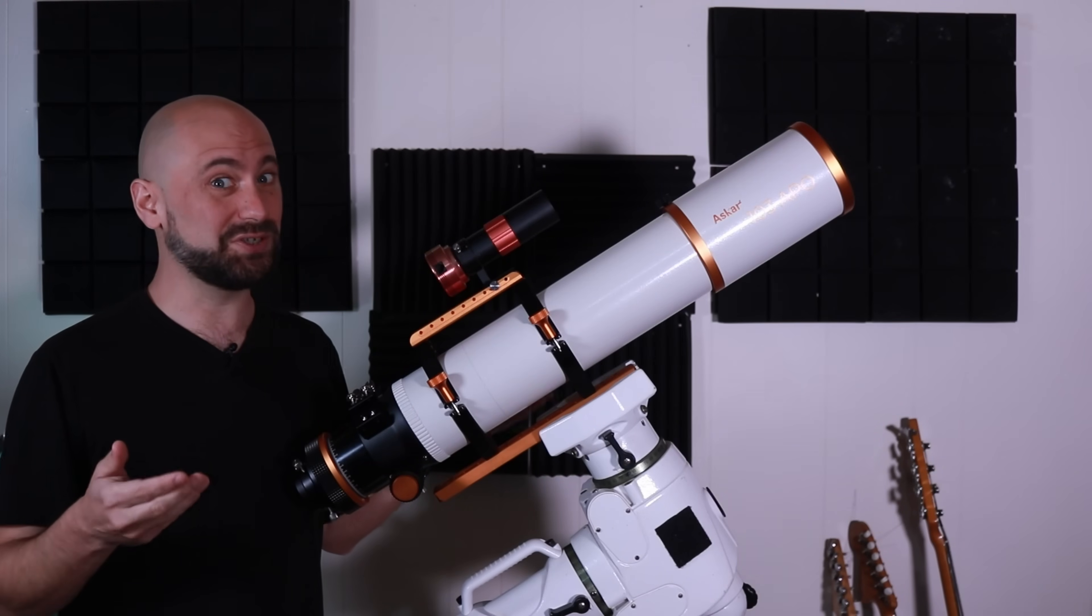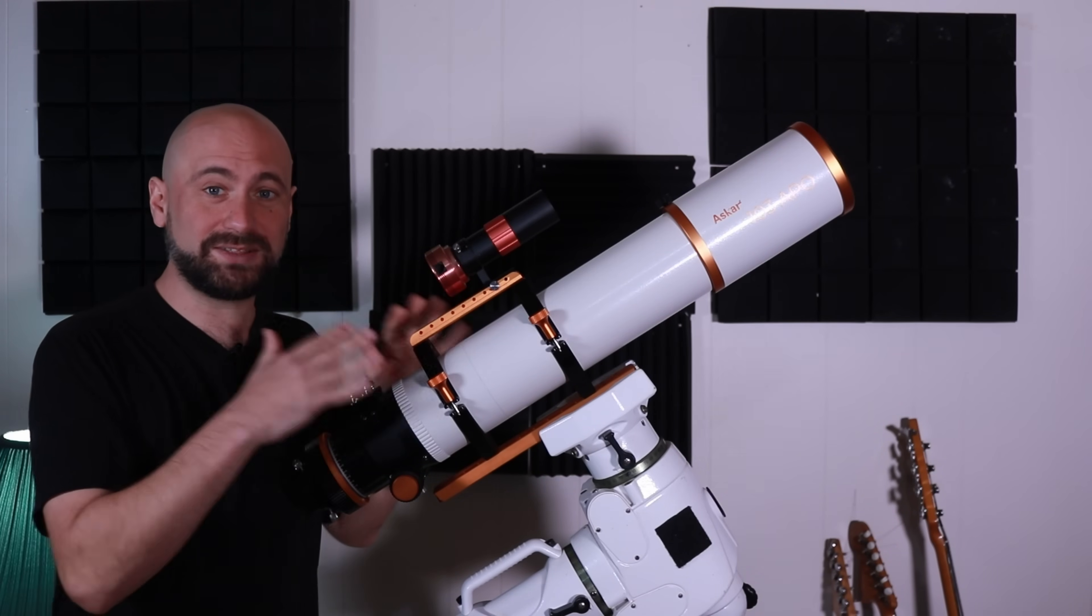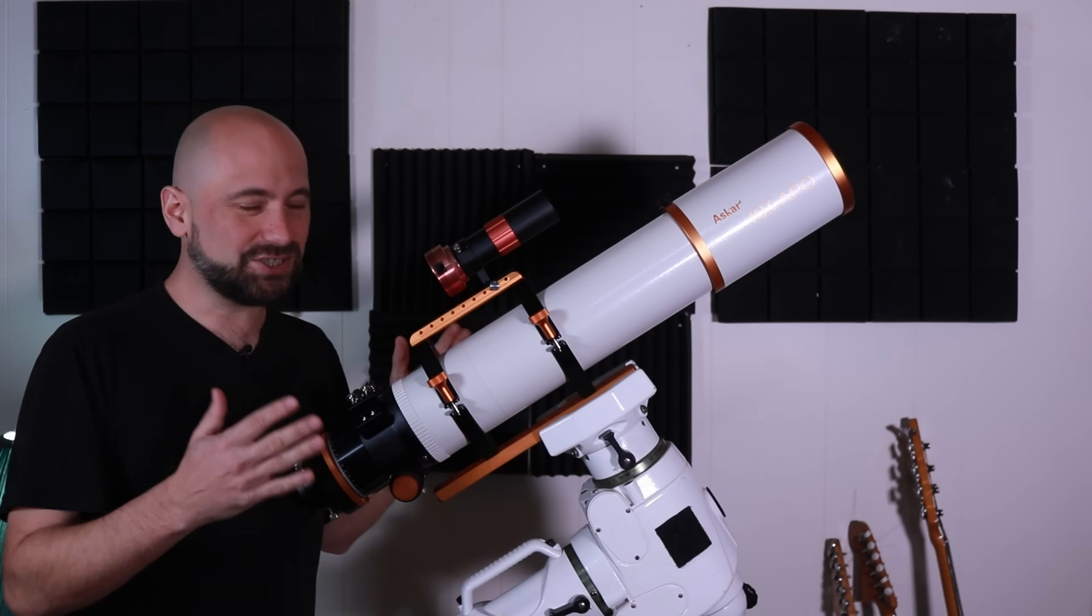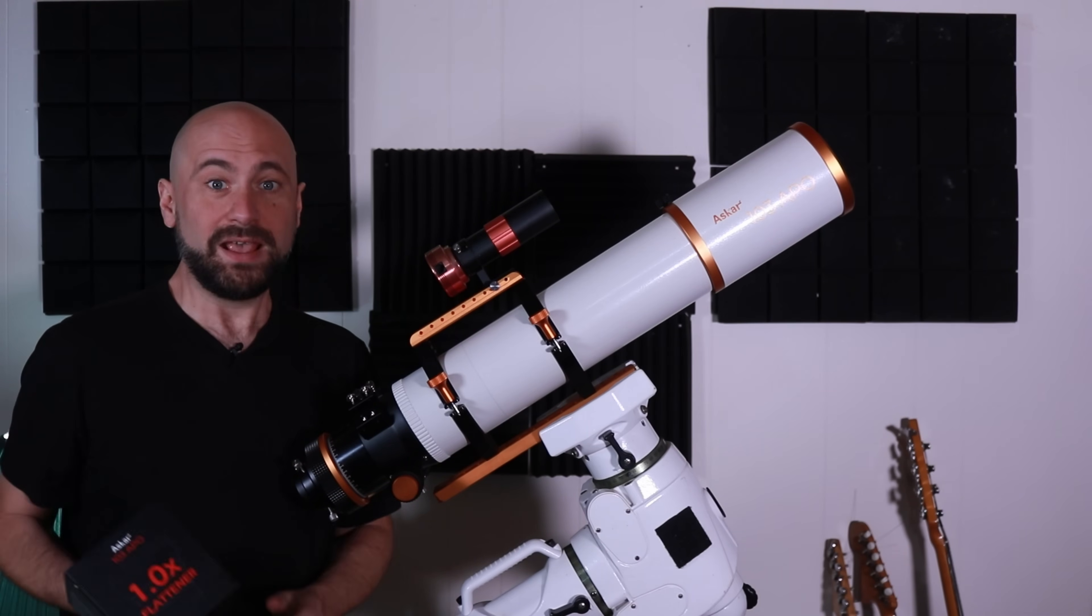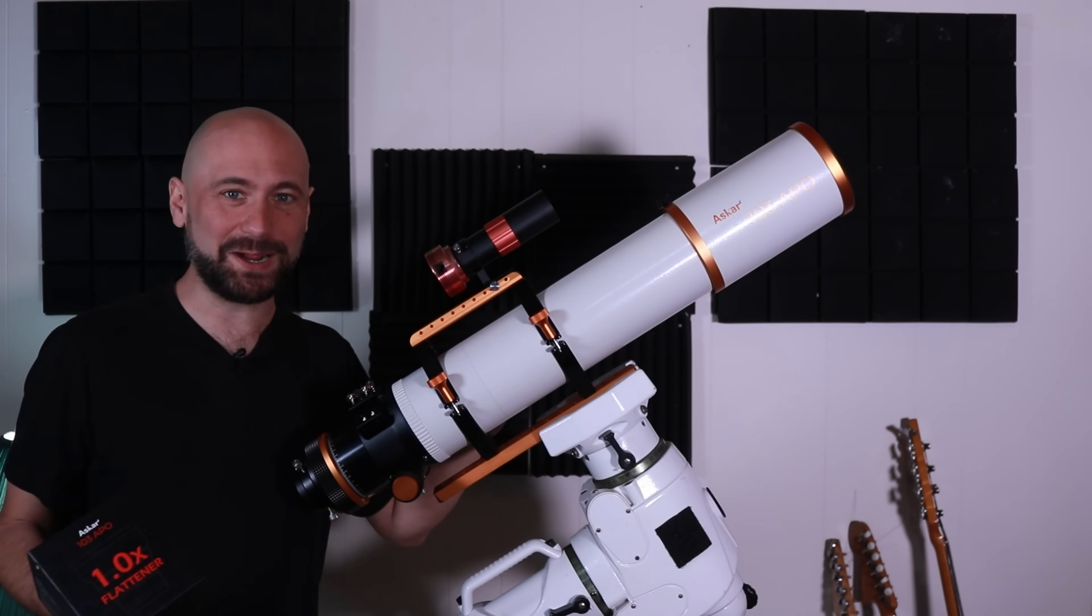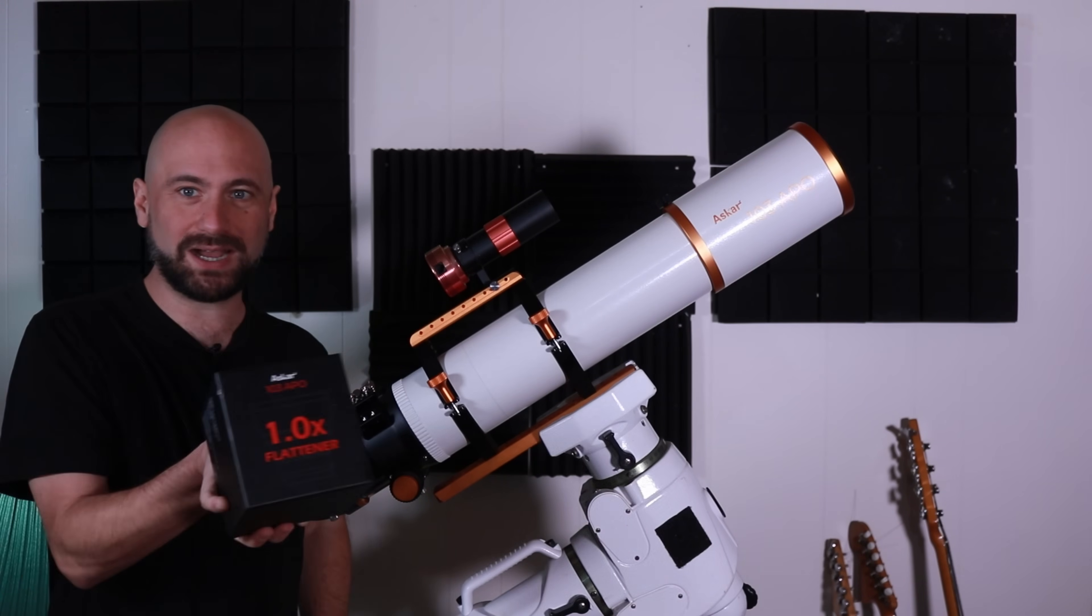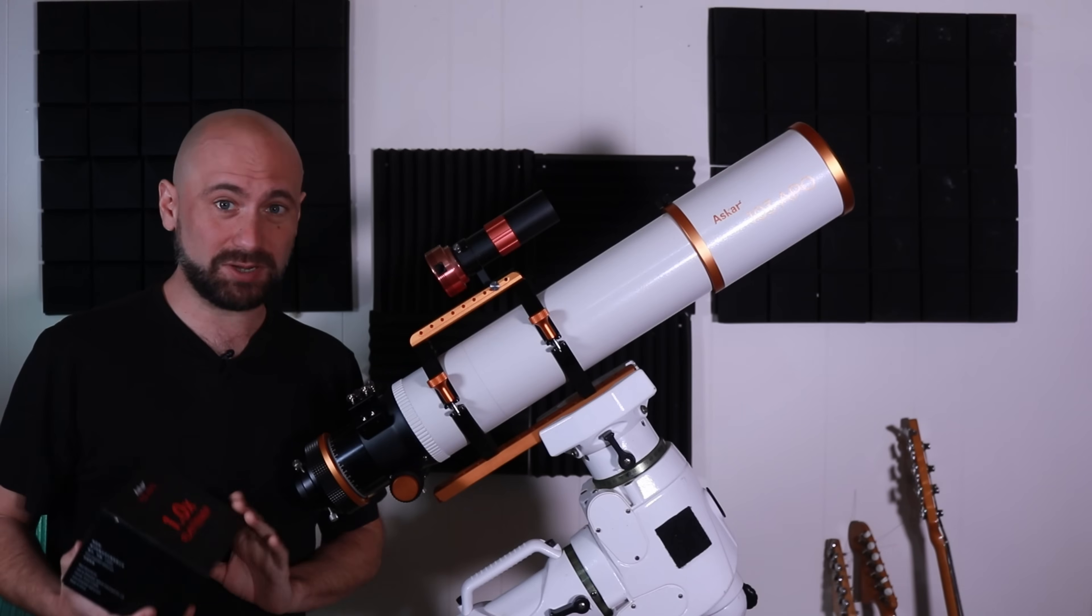Now, all of these are sold separately, and they're between $200 and $300, so if you buy this scope for astrophotography, you're not just spending $1,000, you're at least spending $1,200, so keep that in mind. I personally wanted to shoot at a focal length of 700 millimeters. That's why I got this scope, so I went with the 1x flattener, and this is pretty much what I'm going to be focusing on.